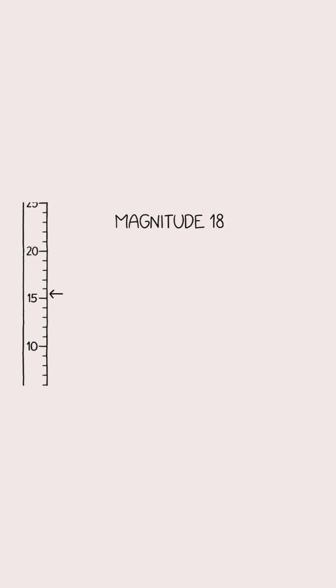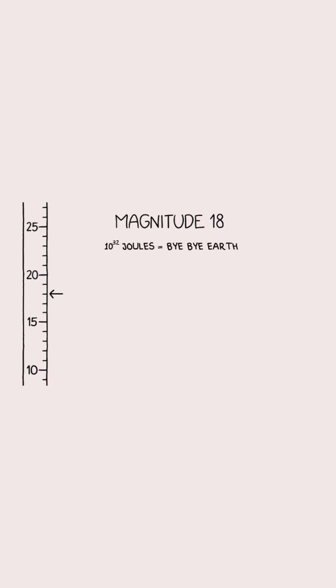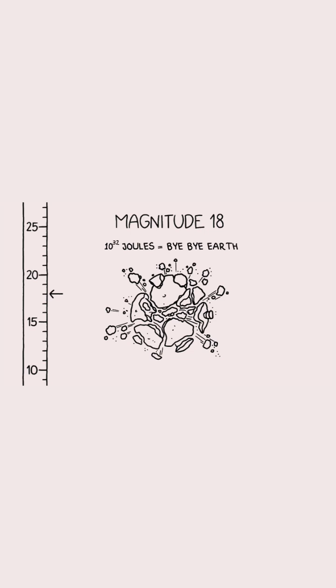Going a few steps further, a magnitude 18 earthquake would release nearly 10 to the 32 joules of energy, which is roughly the gravitational binding energy of the Earth. To put it another way, the Death Star caused a magnitude 18 earthquake on Alderaan.